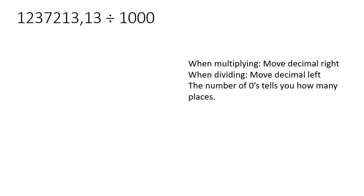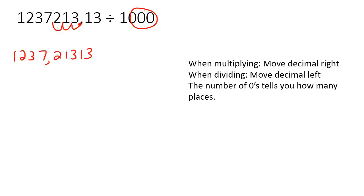Here we're dividing, so we go left, and there are three zeros — so we go one, two, three. That gives us one, two, three, seven comma 21313.